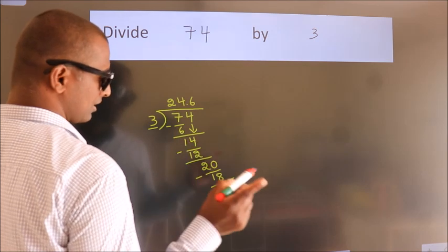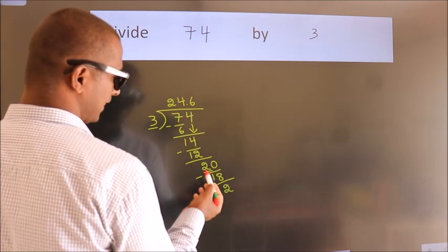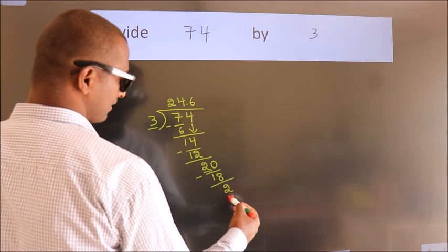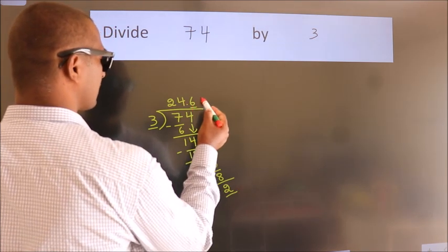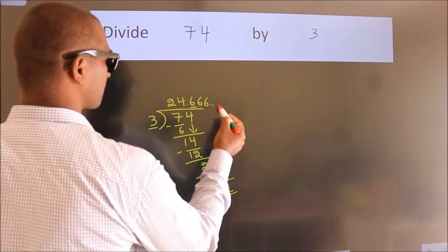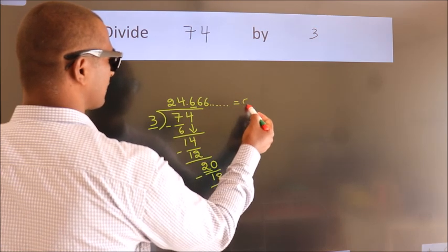Now, you observe. We had 2 here. And we got 2 again. That means this number keep on repeating. So, this is our caution.